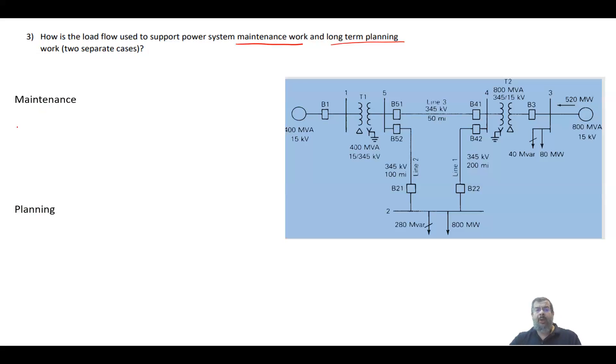This is a typical power system where you have generators, breakers, transformers, transmission lines, and all these components basically need maintenance. When we do maintenance, many times you have to take the unit out from the power system, so there will be no power flow through this one.